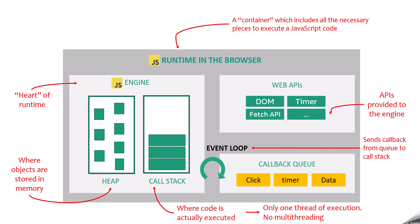We also have event loops and a callback queue. A callback queue contains the callback functions which need to be executed, and these callback functions come from events. For example, when we use the setTimeout function, we specify a callback function that executes after a given time interval. When that interval is complete, the callback function is handed over to the callback queue where it waits for execution. The job of the event loop is to push these callback functions to the call stack.